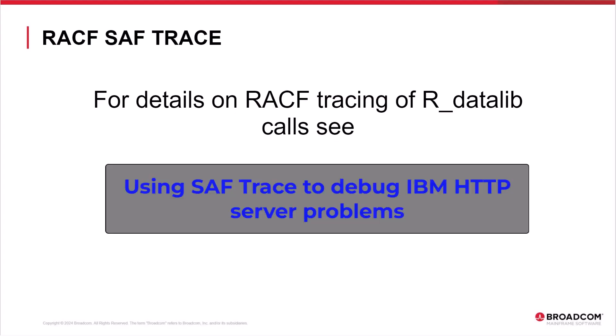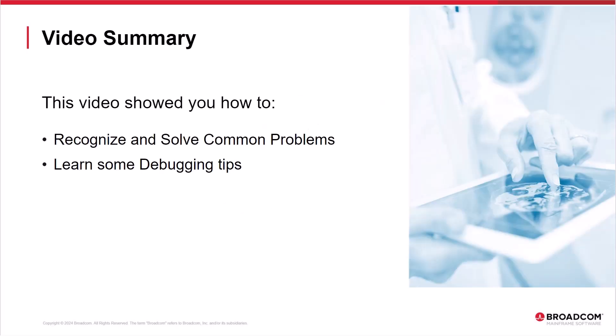For RACF, details on IBM SAF trace for debugging key ring and certificate issues, see IBM's documentation: 'Using SAF Trace to Debug IBM HTTP Server Problems.' Please click on the button to access the documentation. This video showed you how to recognize and solve common problems related to SSL key ring and certificate configurations and learn some debugging tips.